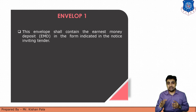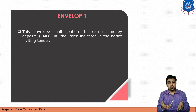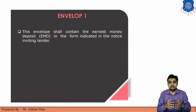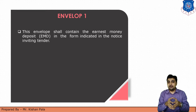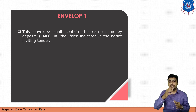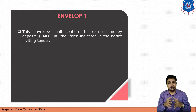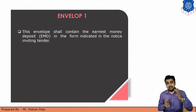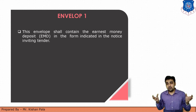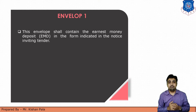Earnest Money Deposit is submitted by the contractor to give assurance that he wants to do that work — it is his willingness to do that work if the client offers it. EMD is generally one to two percent of the total amount of the work. All contractors participating for that work submit EMD, and the selected contractor's EMD will convert into the security deposit, while other contractors get back their EMD value after the bidding process.